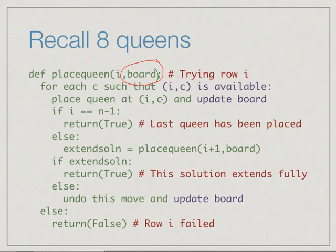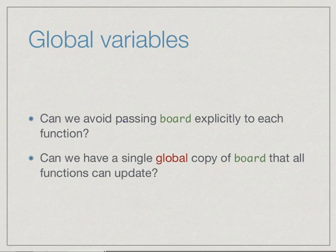The board had to be updated through each function. Now the question is, can we avoid passing the board around all over the place? Can we avoid passing this board explicitly, or can we have a single global copy of the board that all the functions can update, which will save us passing this board back and forth?